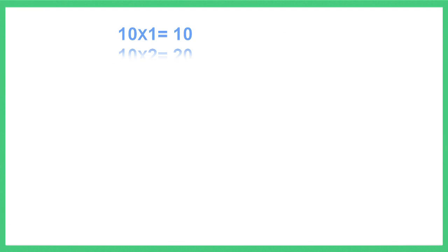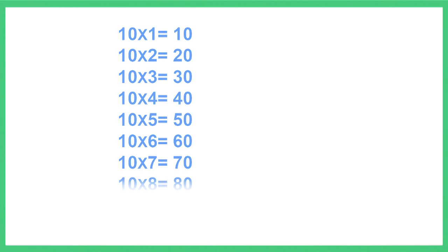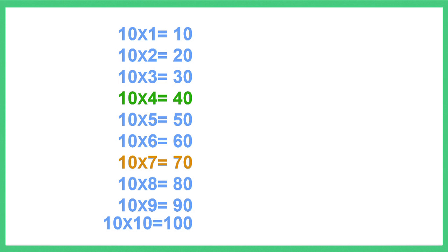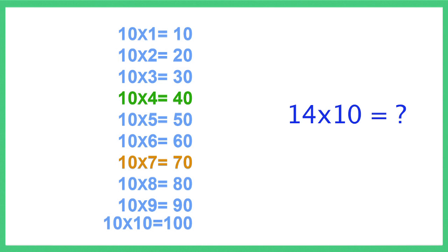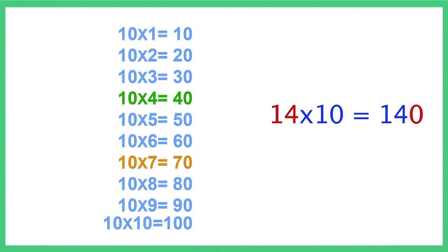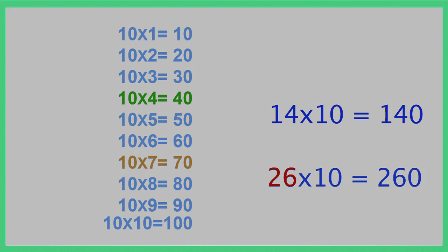Now let students notice a fun fact about multiplying with 10. For example, 4 multiplied by 10 is equal to 40, and 7 multiplied by 10 is equal to 70. Ask students what is 14 multiplied by 10. They just need to add 0 after 14. Similarly, 26 multiplied by 10 is 260.